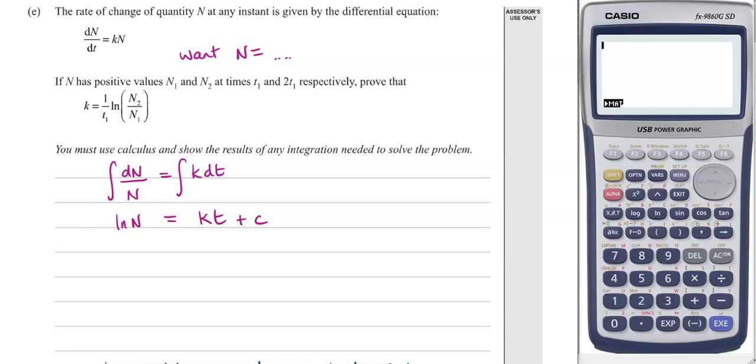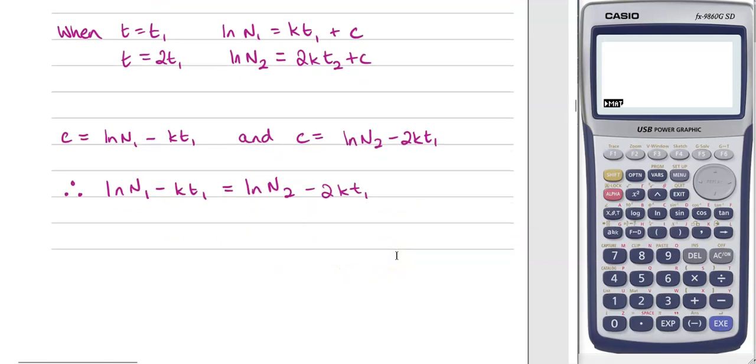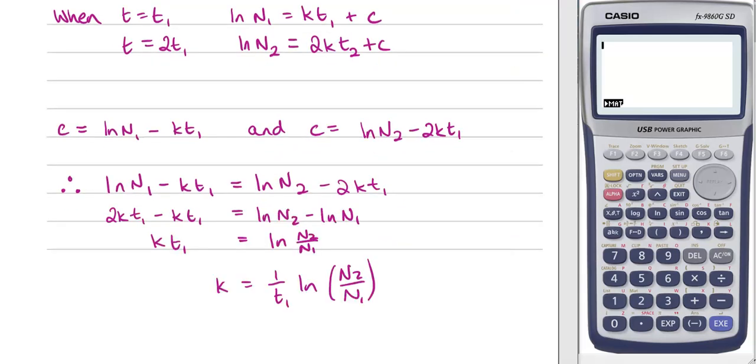Then we substitute in the information we've got. When t equals t1 we get this by putting in n1 and t1, and also this relationship when we've got n2 with 2t1. If we rearrange those and make c the subject, we get these two parts which we can set to be equal. We're bringing the t's to one side, the n's to the other, and solving through until we get what we were asked to be shown in the question.